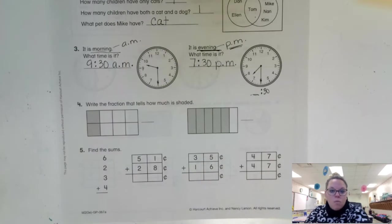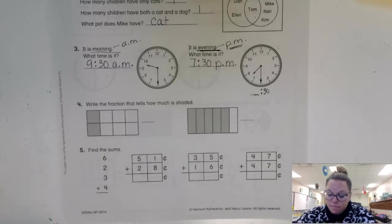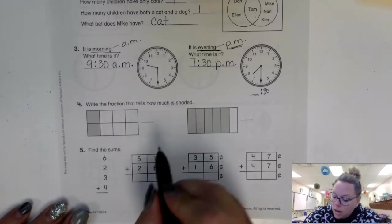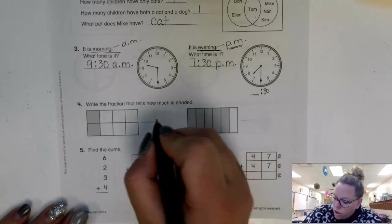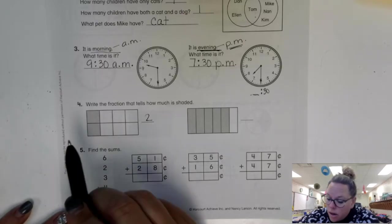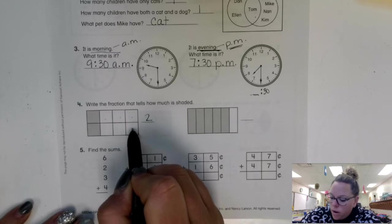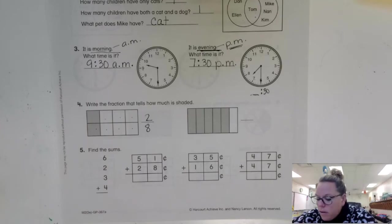All right, we have two more sets of problems to look at. Number four says write the fraction that tells how much is shaded. So we want the top number to be how much is shaded. The bottom number is the total number of squares. One, two. That's my top number. How many total squares are there? That includes the shaded ones. One, two, three, four, five, six, seven, eight. So two out of eight are shaded in that first problem.